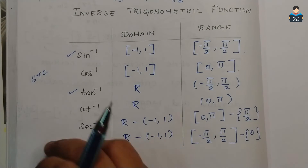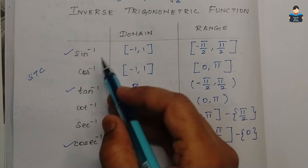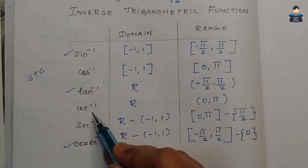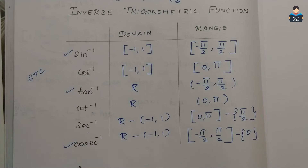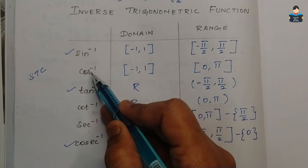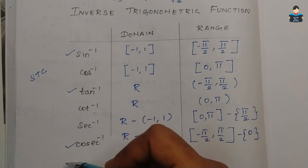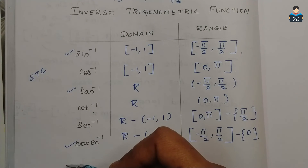So we have one set: sin, tan, cosec. And another set: cos, cot, secant. These are the two sets of inverse trigonometric functions to remember.